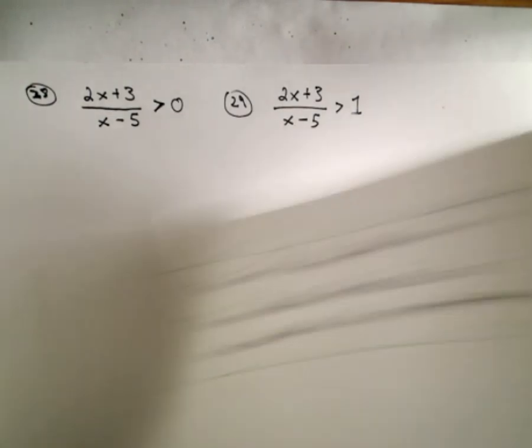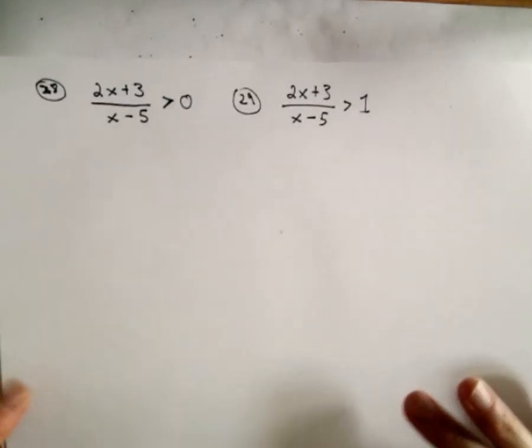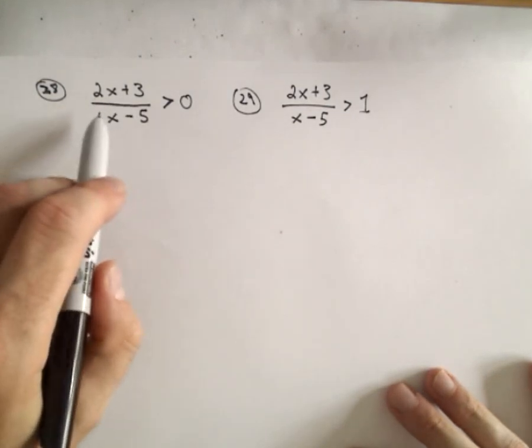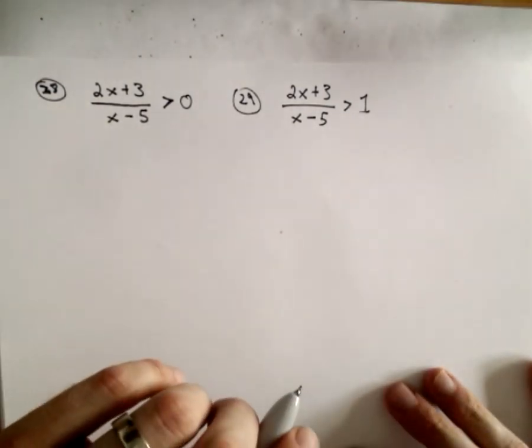Okay, here I'm going to do a couple more rational inequalities. So number 28, we have 2x plus 3 divided by x minus 5. We want that to be greater than 0.